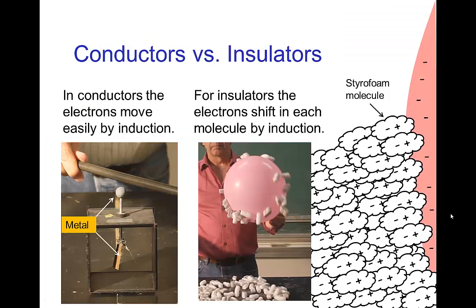There's a difference between electrostatic induction when you have a conductor, in which electrons move easily, versus an insulator. With the electroscope as a conductor, if the rod is positively charged, then the electrons all run to the top of the electroscope leaving the bottom with positive charge. With an insulator, the electrons don't easily move around, but within each styrofoam molecule, if the balloon is negatively charged, the electrons can shift within each molecule so they are away from the balloon, leaving positive charge closer to the balloon. This separation within each molecule leads to an attraction we see as static cling.